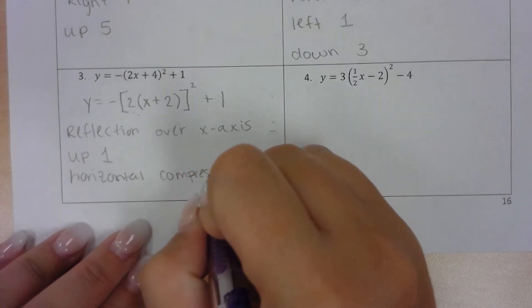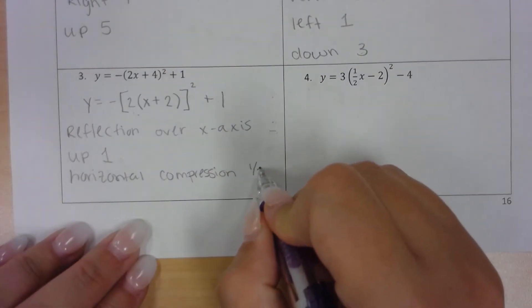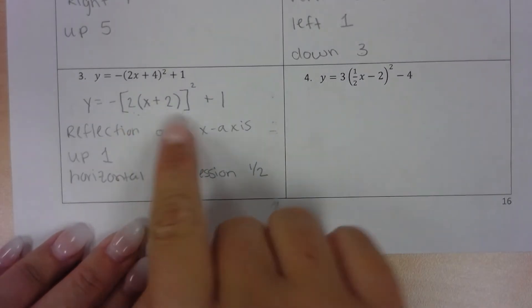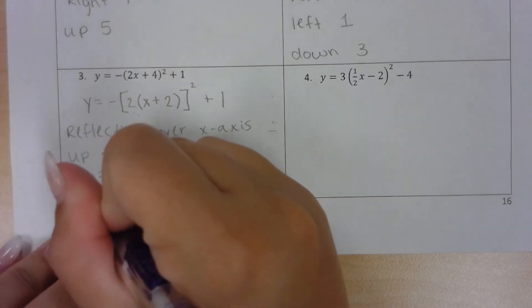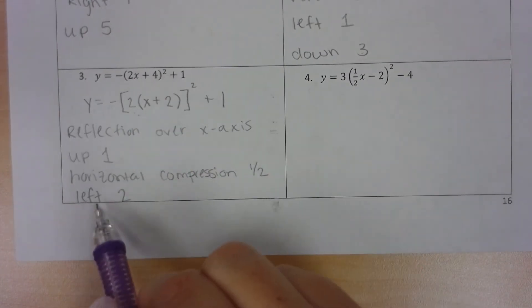So 2 over 1 flips to 1 over 2. It's a horizontal compression by a half. And then the plus 2 tells us left 2, because we think opposite. So this 2 told us compress by a half, this 2 told us left 2.